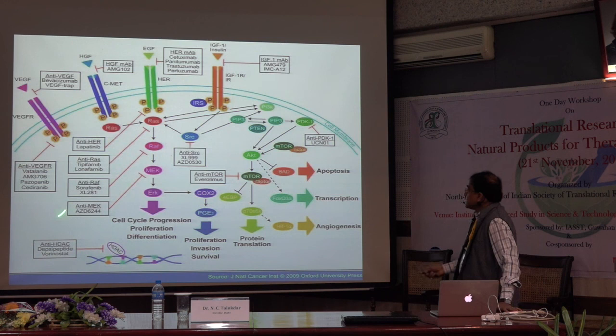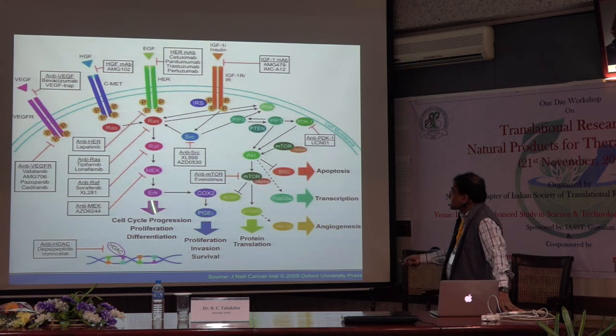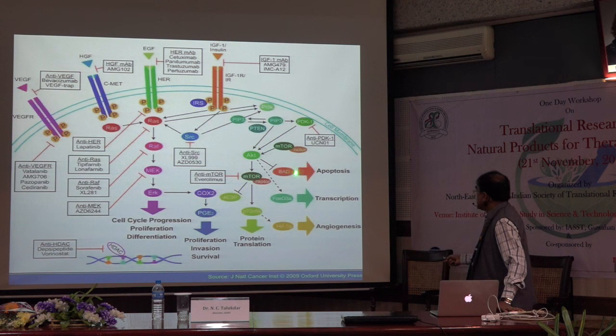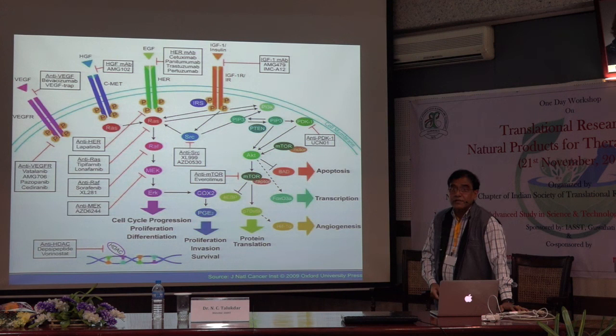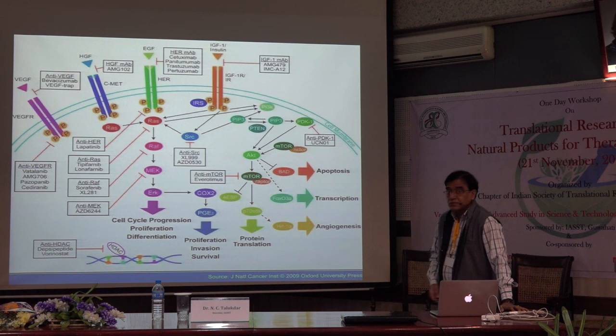Similarly, there are Lapatinib, Sorafenib — targeting downstream kinases like RAS, RAF, MEK, ERK. Some of them target mTOR, like Rapamycin. Some target inflammation-related pathways like anti-PD-1, anti-PD-L1, anti-CTLA4 — these are all next-generation therapies, either targeting immune cells as immunotherapy or directly targeting cancer cells. The important question now is: can we have natural product-derived small molecule inhibitors, or extracts or partially purified fractions, which if added along with these drugs, can increase the efficacy of drugs in combination therapy? Whether we can reduce the dose of drugs, because many drugs have huge side effects, whereas these natural product-derived formulations don't have as many side effects.